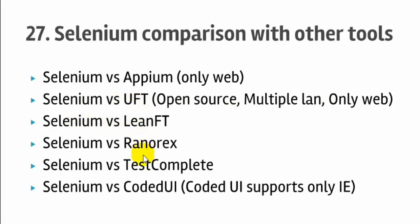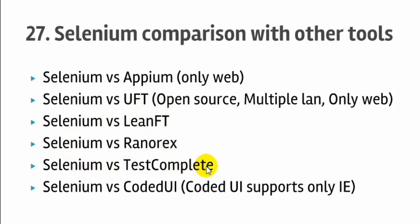Then there are LeanFT, Ranorex, and TestComplete. All these tools are licensed tools — that is the main difference between Selenium and these tools. As mentioned, Selenium can be coded in multiple languages, but in LeanFT you can only code in Java and C#/.NET. In Ranorex and TestComplete you can only code in C#/.NET. Using these tools, you can automate various applications developed in Java, .NET, etc.